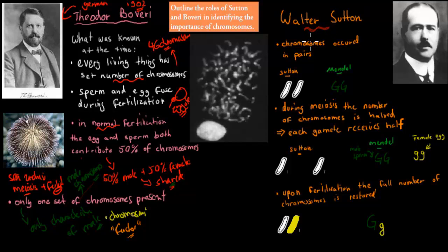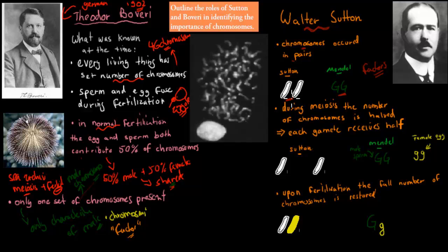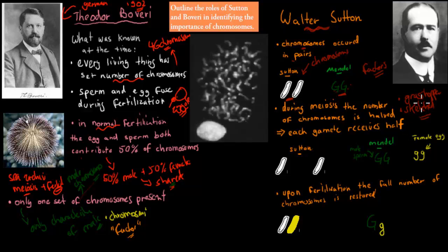That was Theodor Boveri. Walter Sutton is also important. What Sutton found was that chromosomes always occurred in pairs. Remember, Mendel had said there were always two factors — one could be recessive, one dominant, but they always came in pairs. Sutton, who experimented with grasshoppers and made very fine sketches of what he observed, realized that chromosomes also always came in identical pairs of two, just like Mendel's alleles.